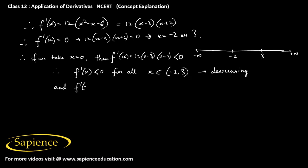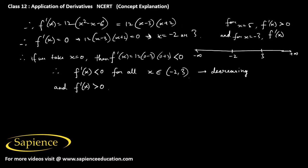If we take a value greater than 3, say x = 5, then f'(x) will obviously be greater than 0. Also, for a value less than -2, say x = -3, f'(x) will obviously be greater than 0. So f'(x) > 0 for all x in (-∞, -2) ∪ (3, ∞), meaning f is increasing in this interval.